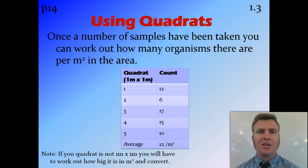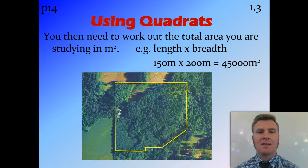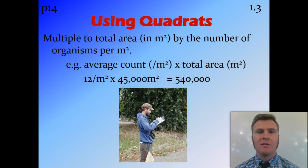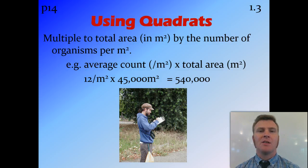In this example, we've done five quadrats and found 12 of the population per square meter. Once we know that, we find the total size of the area — in this example, 150 meters by 200 meters, giving 45,000 square meters. We then multiply the density by the total area: 12 per square meter multiplied by 45,000 square meters gives an estimated population of 540,000 organisms in that area.